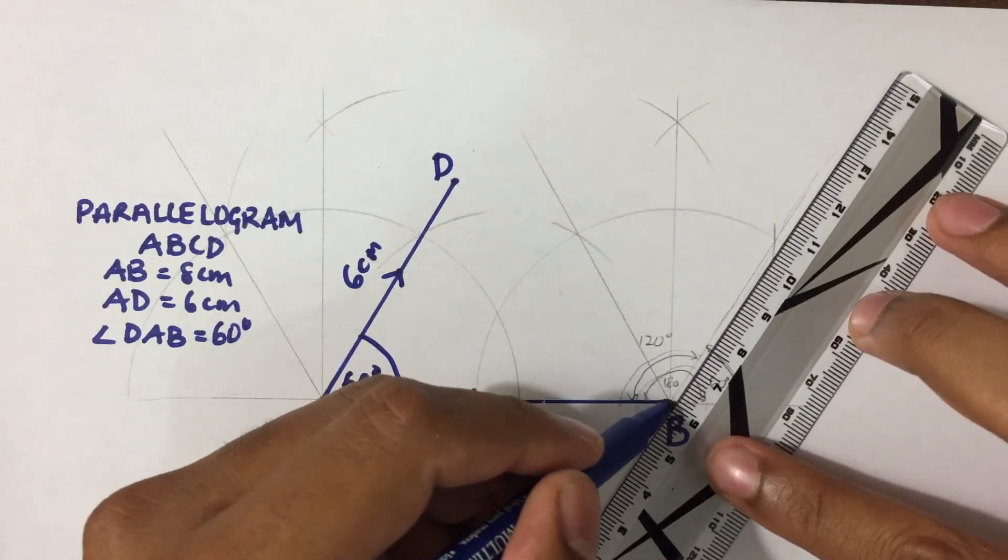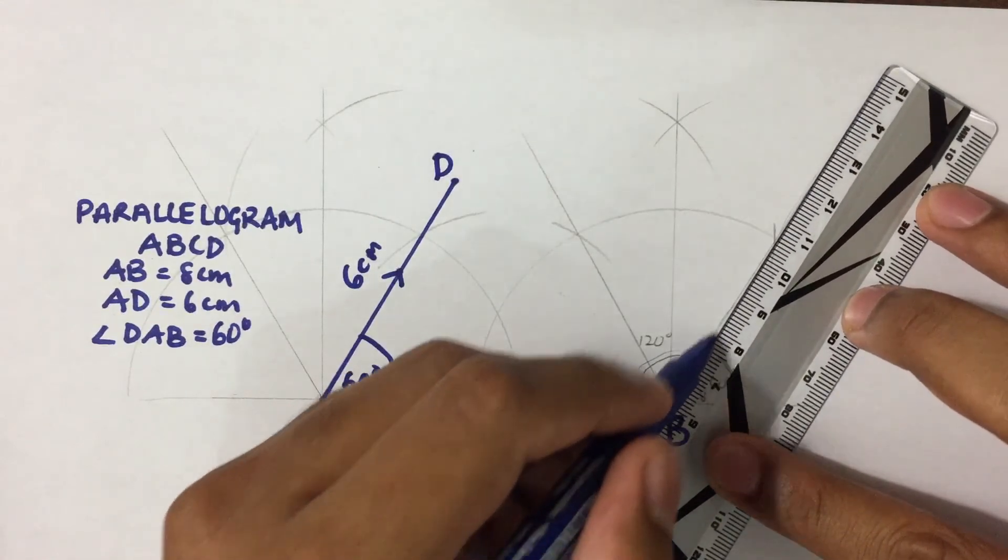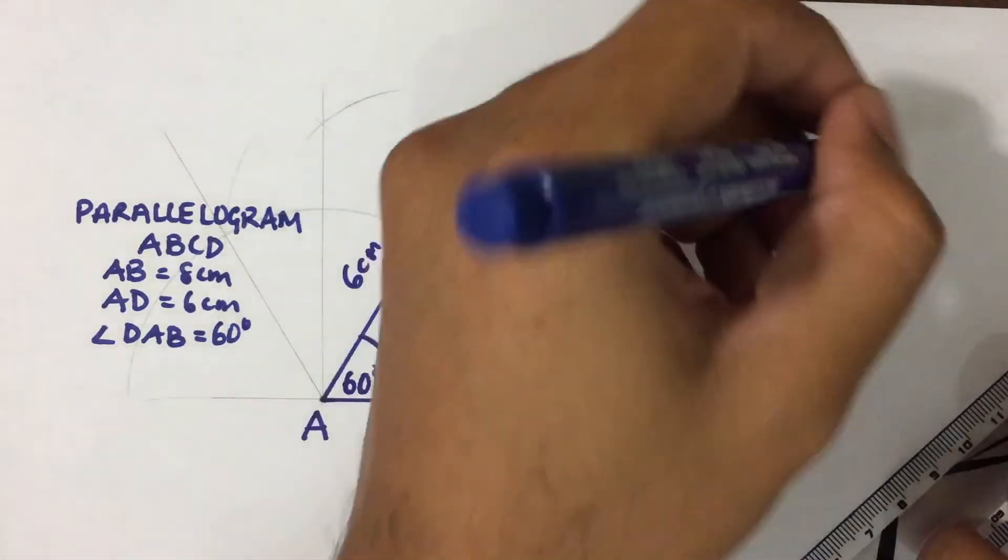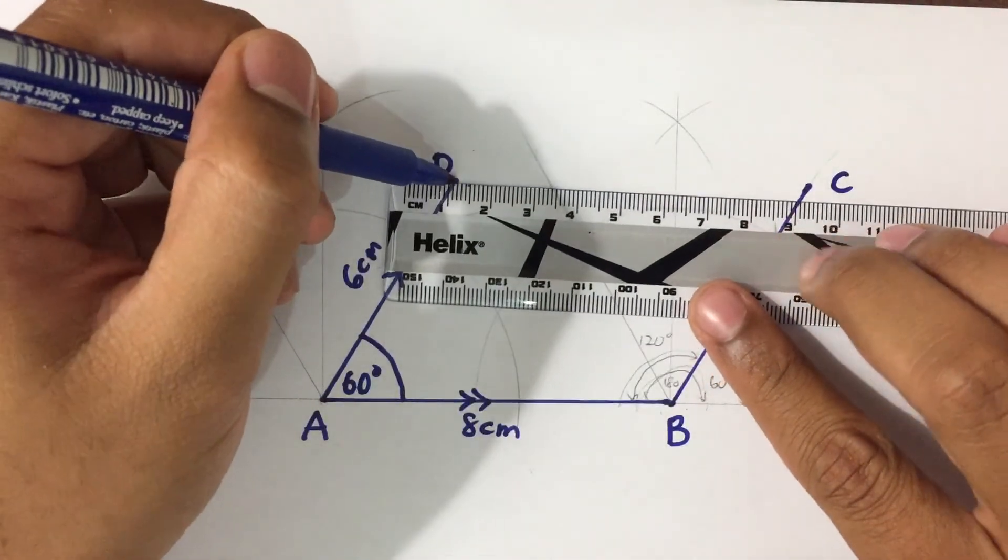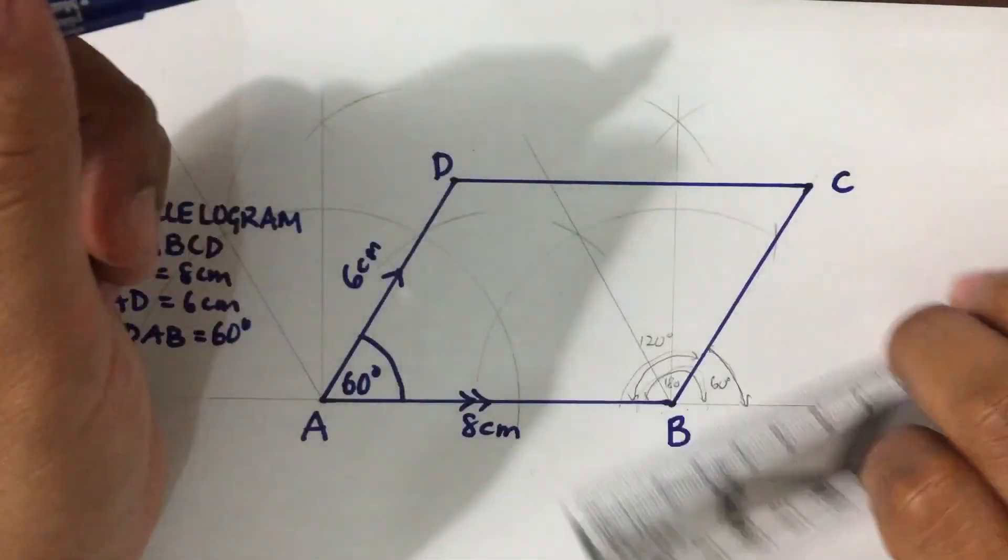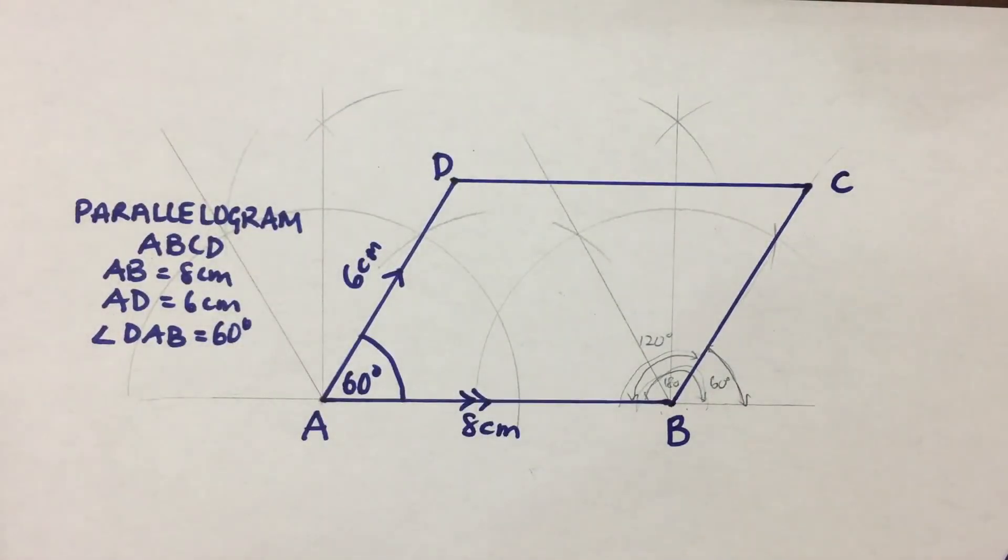So then, we draw 6 centimeters like this. And we label this C. And then we join D and C together to get your parallelogram ABCD. And that's your answer.